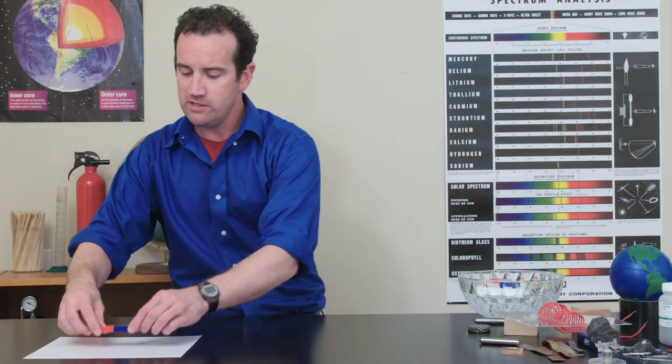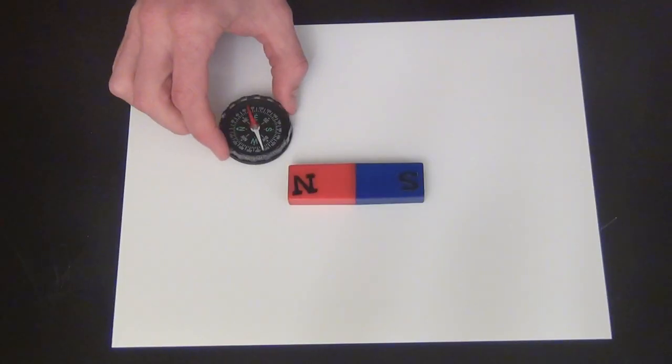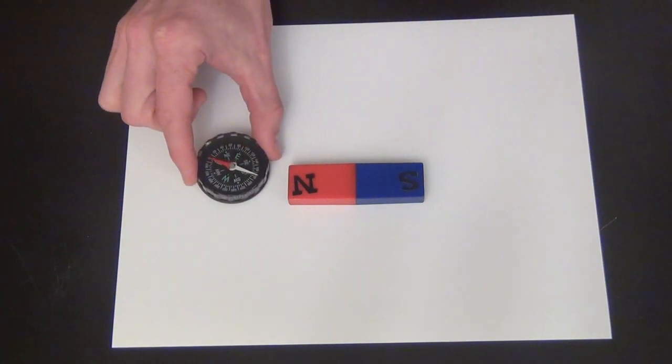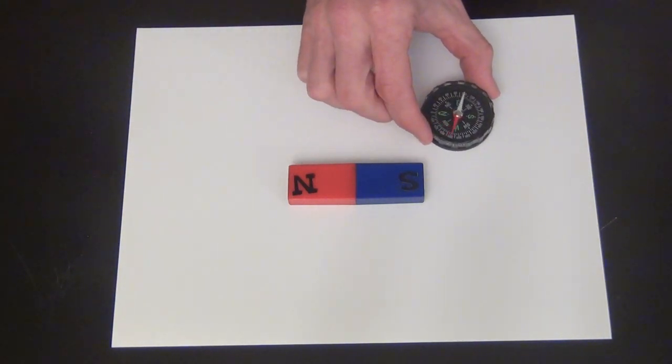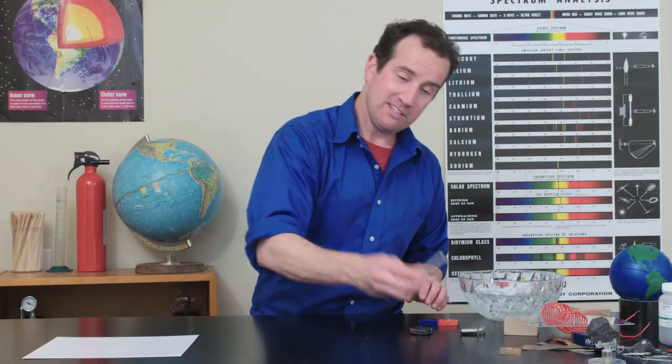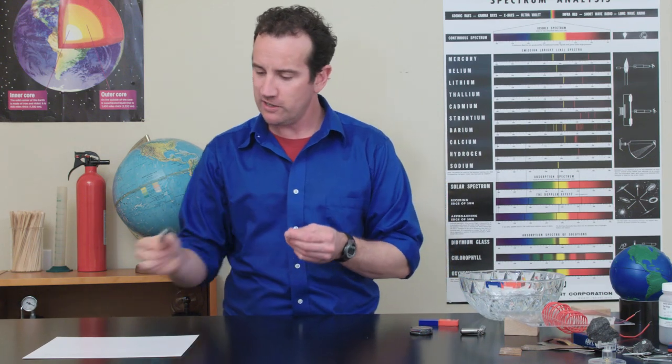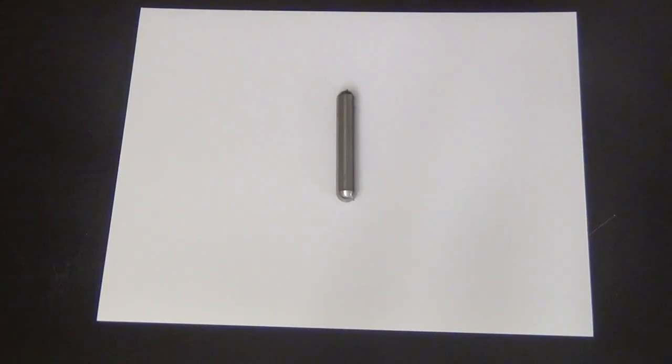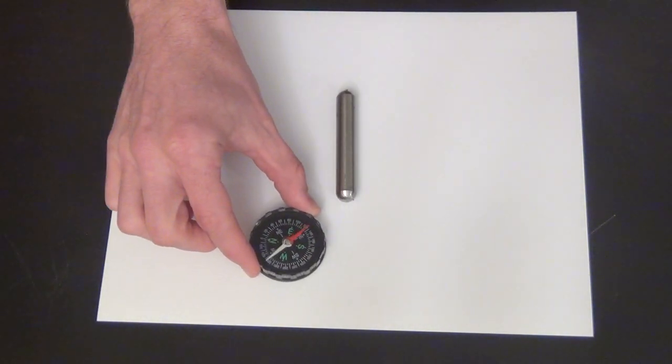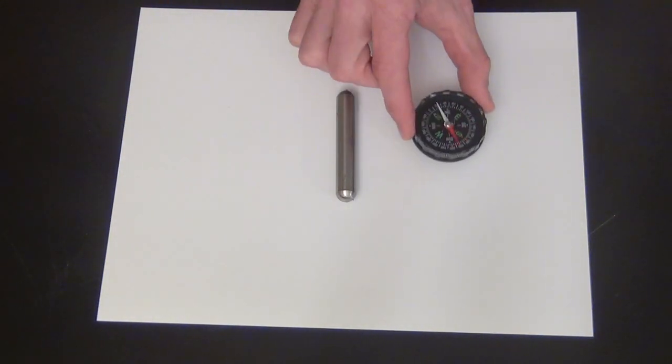Now, what you might not know about the magnetic field is it points in a specific direction. You can figure out what that direction is with a compass. If I bring the compass near the magnet, you'll notice it always seems to point away from the north and toward the south, out of north and into south. This magnet is unlabeled, and we can figure out which side is north and which side is south with a compass. Let's see, which side do you think is the north side? Out of north and into south.